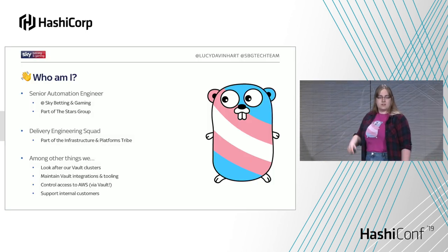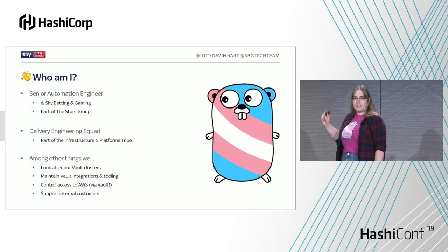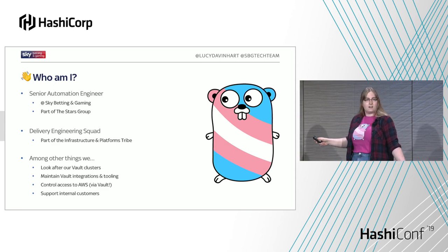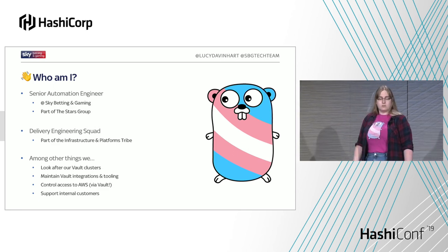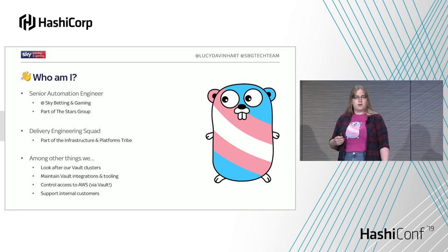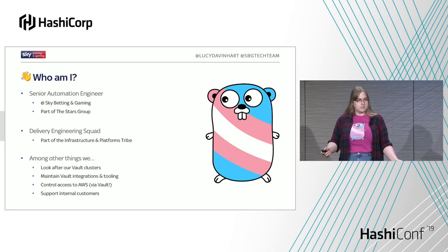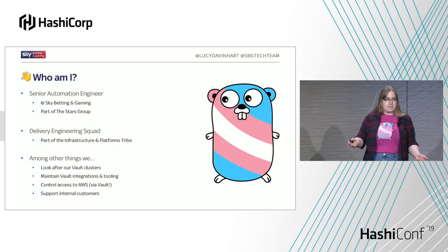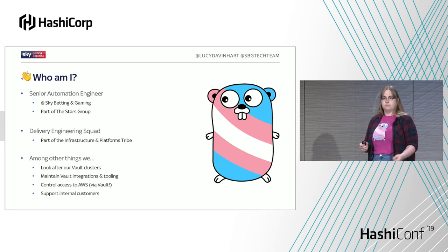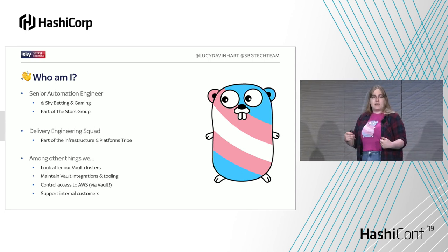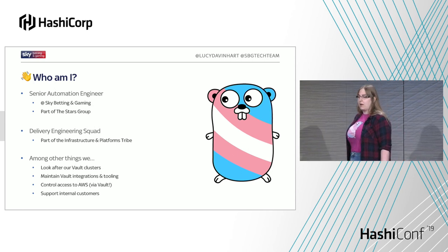My name is Lucy Davenhart. I'm a senior automation engineer at Sky Betting and Gaming. I've been there for about three and a half years, which is about as long as we've been using Vault. My team looks after several things, but pertinent to this talk: we look after our Vault clusters, we maintain integrations with Vault, we handle some tooling around Vault, and we support all our internal customers using the tool. We're also the AWS gatekeepers, because we manage access to that via Vault as well.